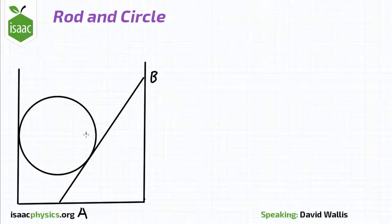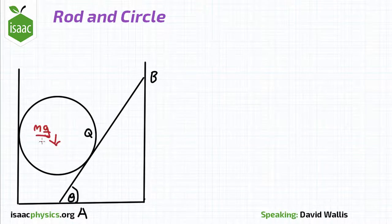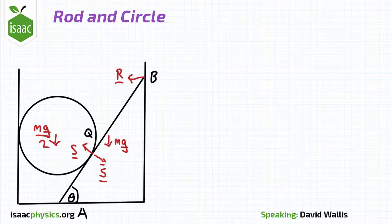We draw a diagram showing the relevant forces. The weight of the circle is mg over 2, the rod is mg, and there are reaction forces on the rod we will label R and S. We are trying to find R.